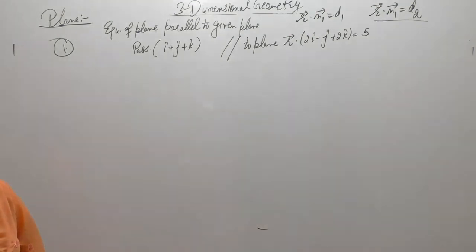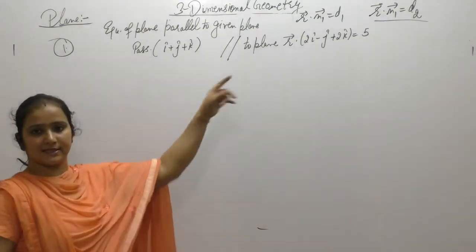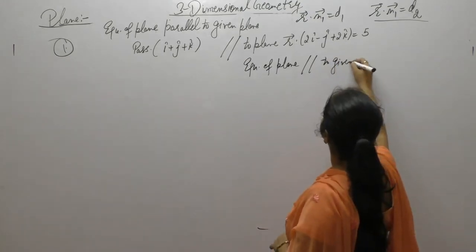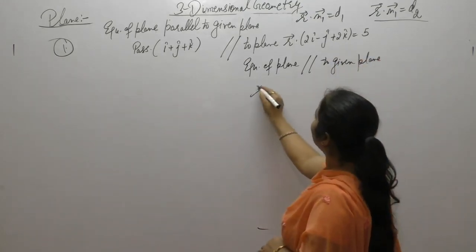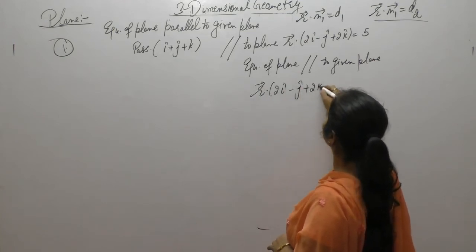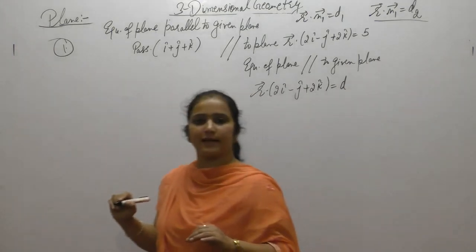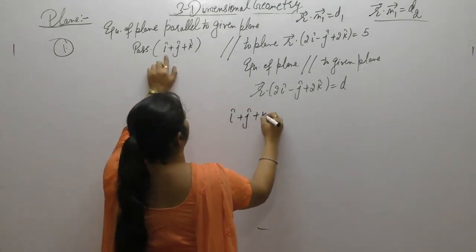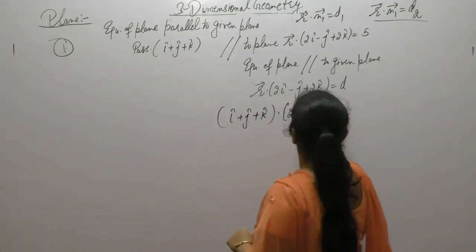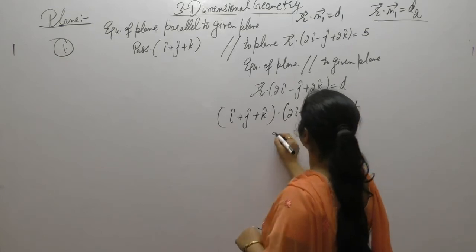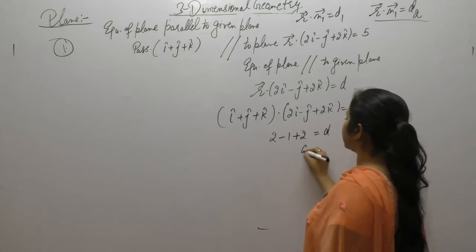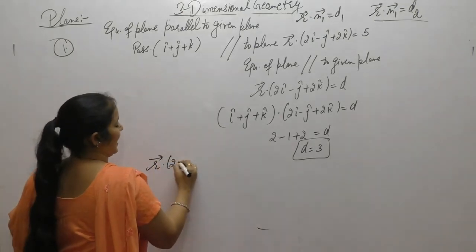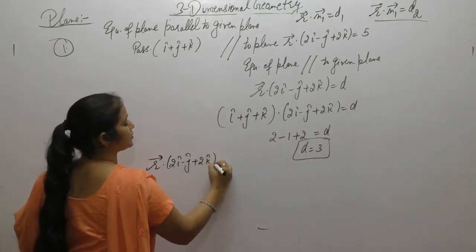We want to find the equation of the parallel plane. The normal remains the same, so the equation is r dot (2i minus j plus 2k) equals d. Since the plane passes through i plus j plus k, substitute: 1 times 2 minus 1 plus 2 times 1 gives d equals 3. So the required equation is r dot (2i minus j plus 2k) equals 3.